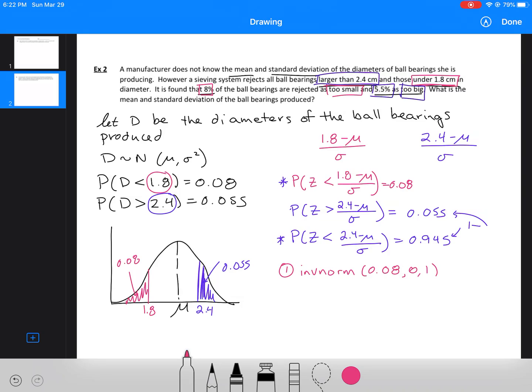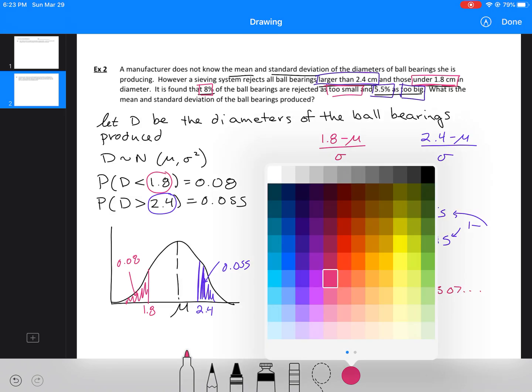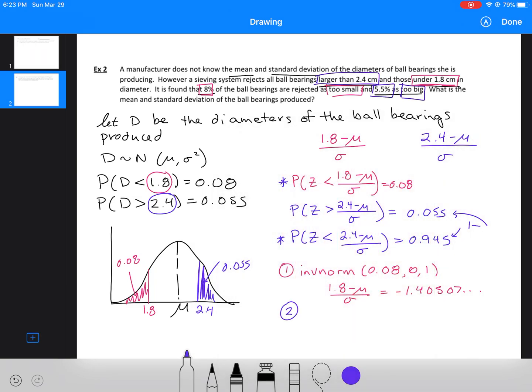So when I do that, I'm going to get an answer. And that answer is equal to -1.40507 and some change. My second one is using my blue. Again, I'm going to use inverse normal. So 0.945, 0 and 1, gives me a similar looking equation: 1.598193.